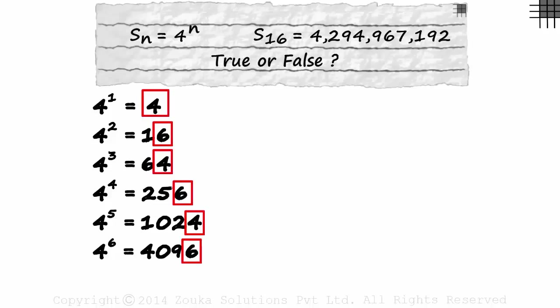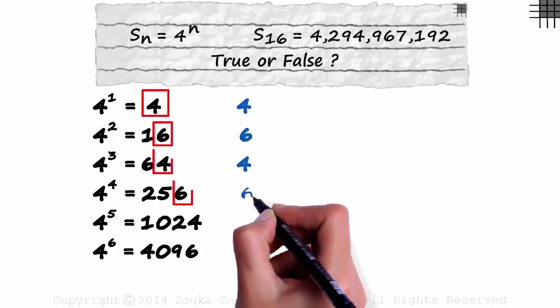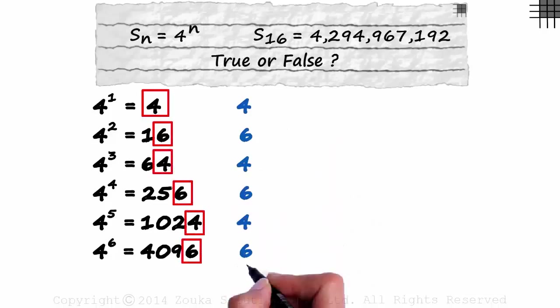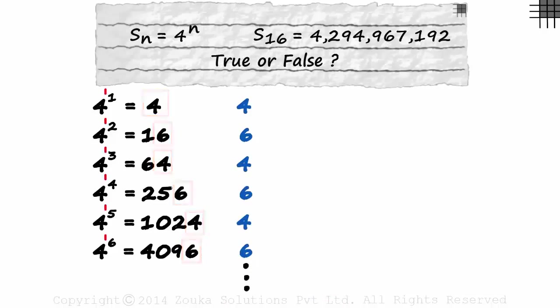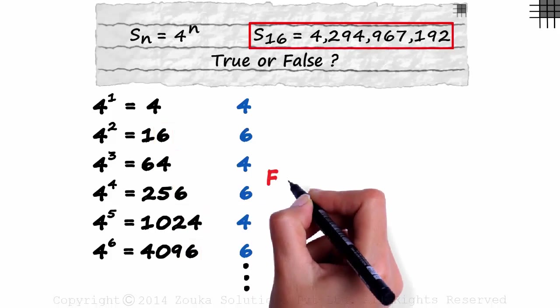Look at the unit digits of every term. It's either 4 or 6: 4, 6, 4, 6, 4, 6 and so on. No matter what the power of 4 is, the unit's digit will either be 4 or 6. This answer is definitely false.